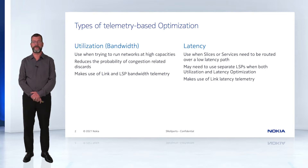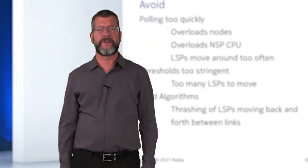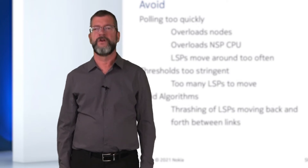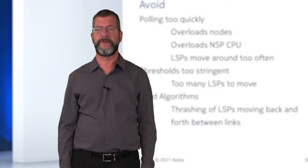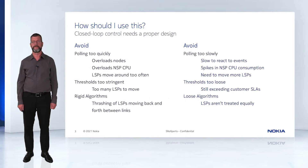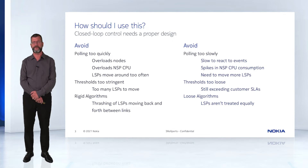The best operational behavior is achieved when separate LSPs are used for these types of telemetry-based optimization. There are several design considerations that enable effective closed-loop control. You should avoid polling too quickly, overloading the nodes, the NSP CPU, and causing LSPs to move around too often. You should also avoid polling too slowly, slowing down the reaction to events in the network, causing spikes in NSP CPU consumption, and resulting in the need to move more LSPs.